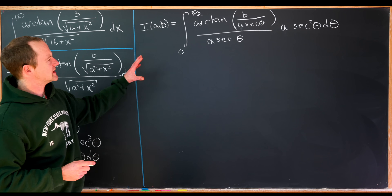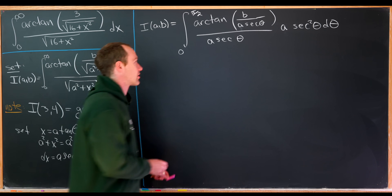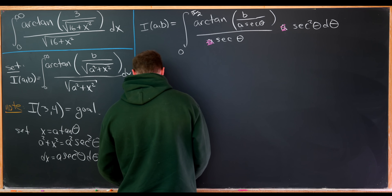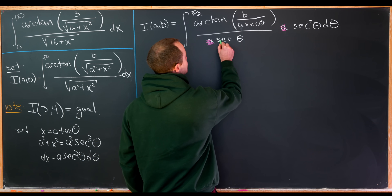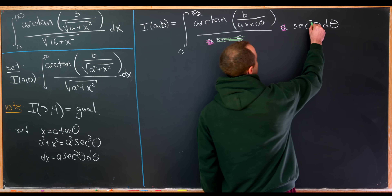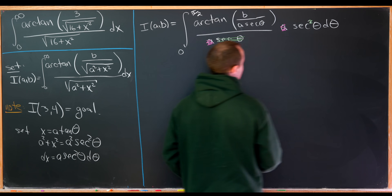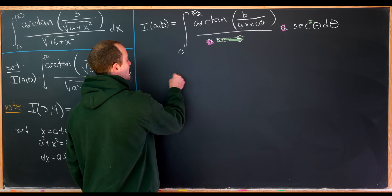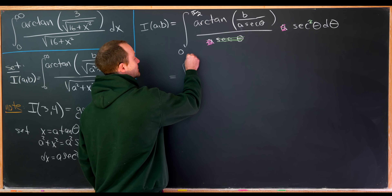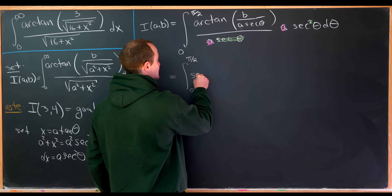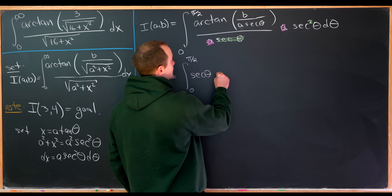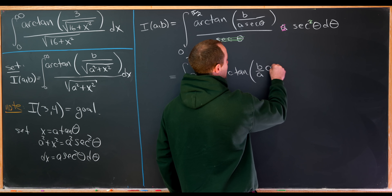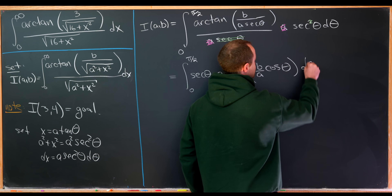Some simplification can occur. The factor of a cancels, and then the secant in the denominator cancels with the secant squared in the numerator down to just a secant in the numerator. We can rewrite this as the integral from zero to pi over two of secant of theta times the arctan of b over a times cosine of theta d theta.